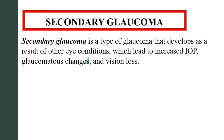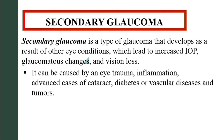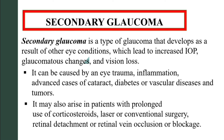Let's talk about secondary glaucoma. Secondary glaucoma is a type of glaucoma that develops as a result of other eye conditions which lead to increased intraocular pressure, glaucoma changes, and vision loss. Secondary glaucoma can be caused by eye trauma, inflammation, advanced cases of cataracts, diabetes or vascular diseases, and tumors. It may also arise in patients with prolonged use of corticosteroids, laser or conventional surgery, retinal detachment, or retinal vein occlusion or blockage.